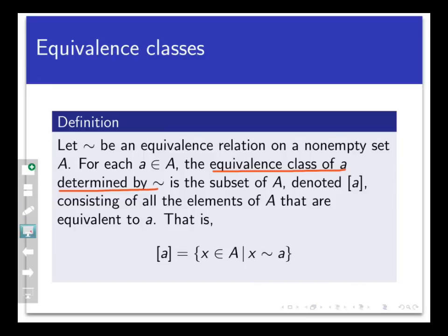We denote this [a], consisting of all the elements of A that are equivalent to a. In other words, the equivalence class of a is equal to the set of all x, such that x is equivalent to a. So for example,